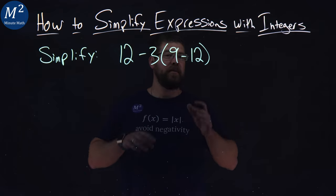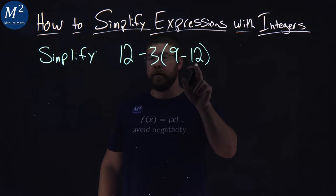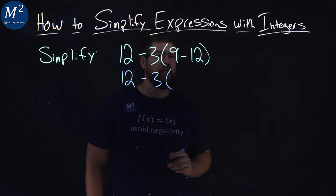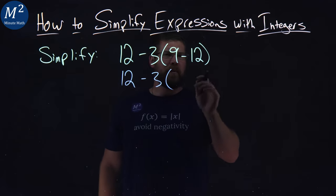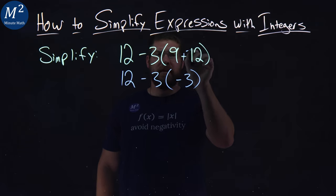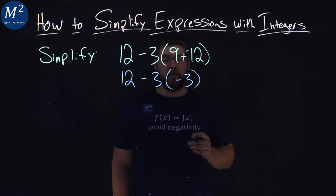Order of operations tells us that we have to deal within the parentheses first, so we have 9 minus 12 here. So let's rewrite everything else: 12 minus 3, and in the parentheses, 9 minus 12, well, that's negative 3. Remember, 9 minus 12 is plus a negative 12, right? So 9 plus a negative 12 gives me negative 3.